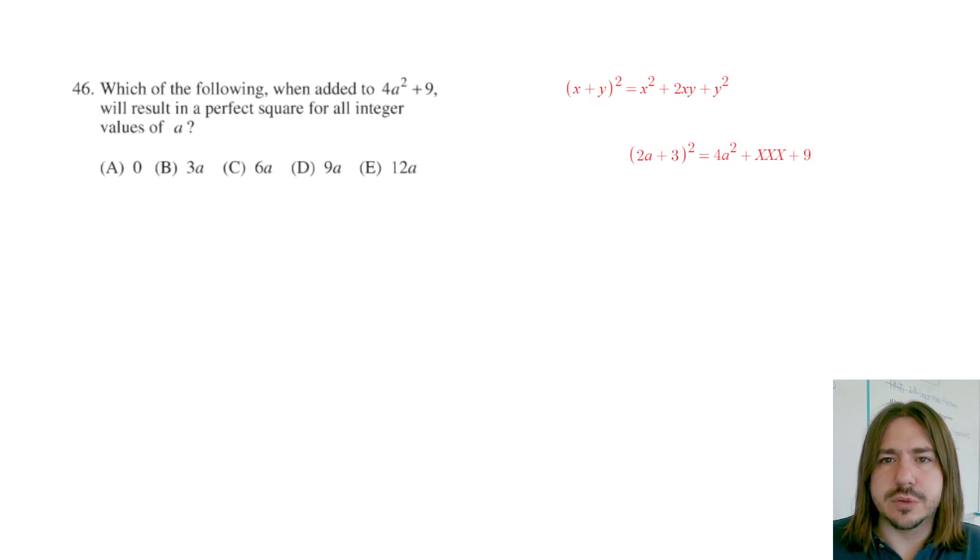So the reason why I know it's got to be written like this is because the square root of this first term is going to be 2a, because we break this down a little further: 2a plus 3 times 2a plus 3. That's what it means when you square something.